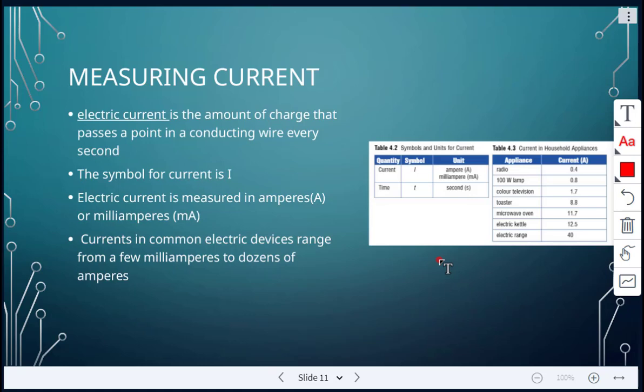And here we're just looking at household appliances and then just some currents in household appliances. For like a toaster, it's about 8.8 amperes. An electric kettle is 12.5 amperes. A microwave oven, 11.7 amperes. Just some examples there.